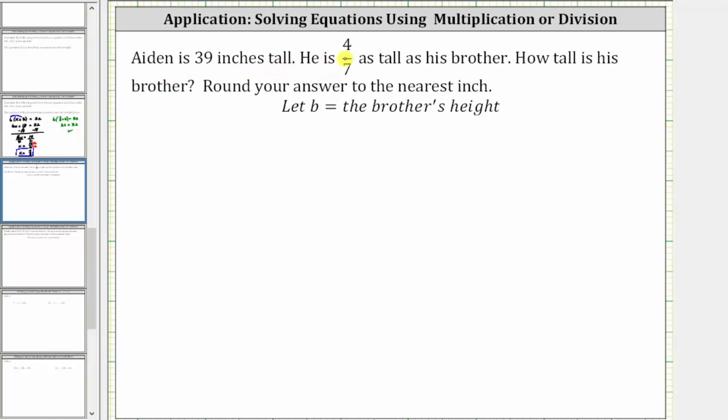Aiden is 39 inches tall. He is 4/7ths as tall as his brother. How tall is his brother? And we're told to round the answer to the nearest inch.